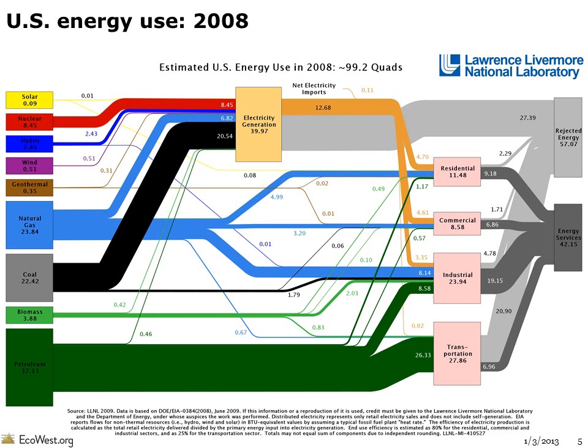Sankey diagrams created by the Lawrence Livermore National Laboratory depict both the source and use of energy. The boxes on the left show the nation's power portfolio and the lines moving to the right show where that energy ends up, with the width varying by the magnitude of the flow. This graphic, using 2008 data, shows that petroleum in the transportation sector accounts for the biggest overall energy flow. In 2008, more than half of electricity generation came from coal, followed by nuclear and natural gas.